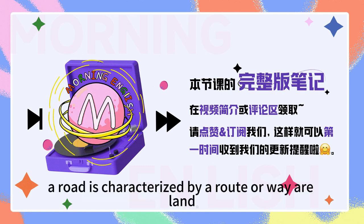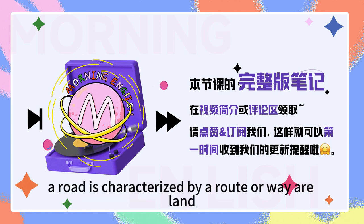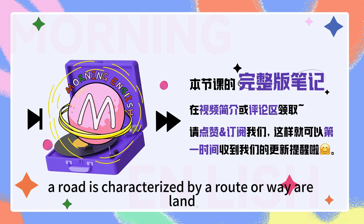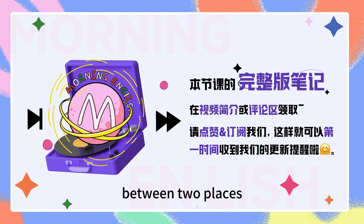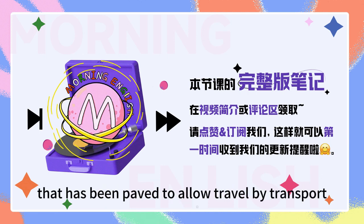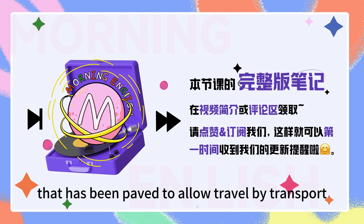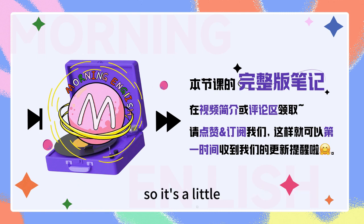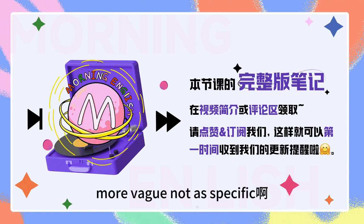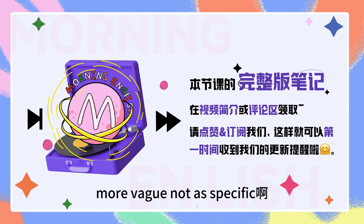Usually there are shops or stores or houses along both sides of a street, which facilitates public interaction. 所以street的感觉就是那种比较城市里的大街,对吧?两边会有很多商店的那种热闹的感觉. Right. So how about a road? A road is characterized by a route or way on land between two places that has been paved to allow travel by transport. So it's a little more vague, not as specific.